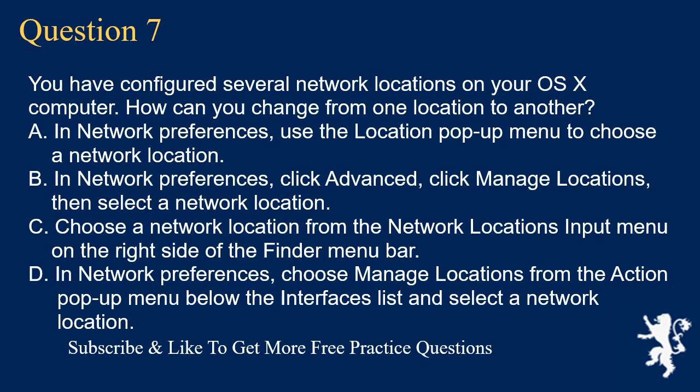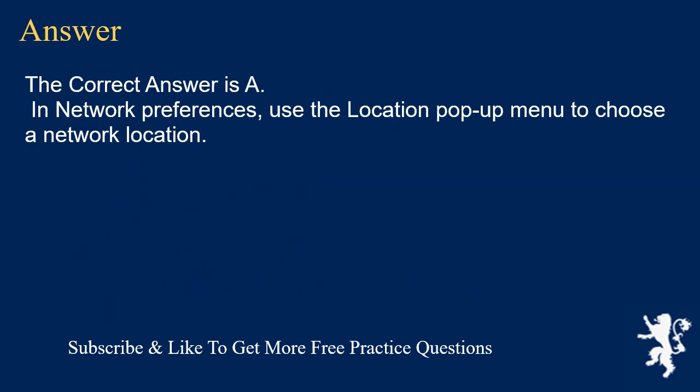Question 7. You have configured several network locations on your OSX computer. How can you change from one location to another? A. In Network Preferences, use the Location pop-up menu to choose a network location. B. In Network Preferences, click Advanced, click Manage Locations, then select a network location. C. Choose a network location from the Network Locations input menu on the right side of the Finder menu bar. D. In Network Preferences, choose Manage Locations from the Action pop-up menu below the Interfaces list and select a network location. The correct answer is A: In Network Preferences, use the Location pop-up menu to choose a network location.